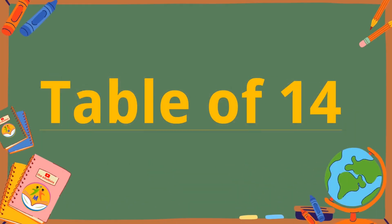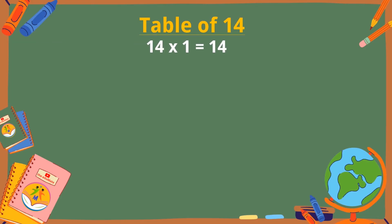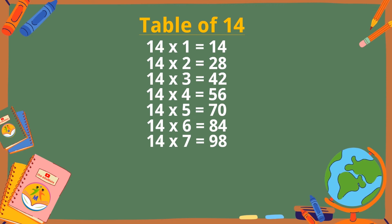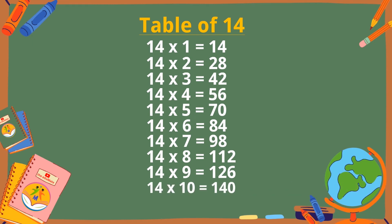Table of 14. 14 ones are 14, 14 twos are 28, 14 threes are 42, 14 fours are 56, 14 fives are 70, 14 sixes are 84, 14 sevens are 98, 14 eights are 112, 14 nines are 126, 14 tens are 140.